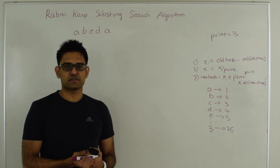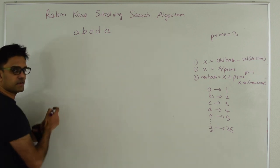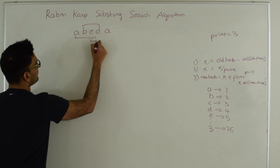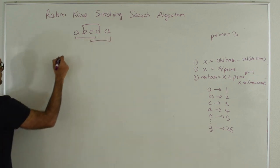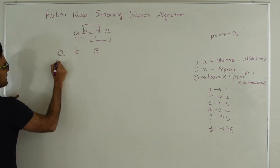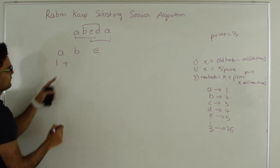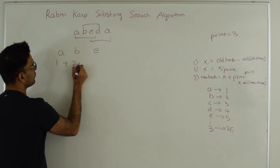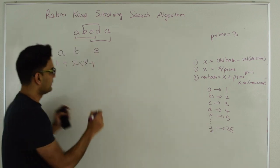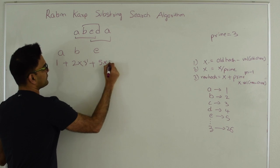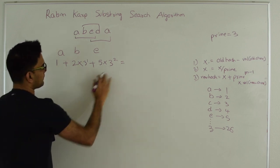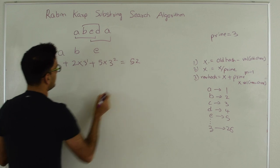Let's see how we calculate a rolling hash function. Let's say we are trying to calculate the hash for substrings of length 3. So here there are 3 substrings: ABE, BED, and EDA. First we have ABE. To calculate the hash we take the value of A as-is, so 1, plus value of B which is 2 multiplied by the prime number 3 raised to 1, plus value of E which is 5 multiplied by the prime 3 raised to 2. This gives us 1 plus 6 plus 45, which equals 52. So 52 is our initial hash.